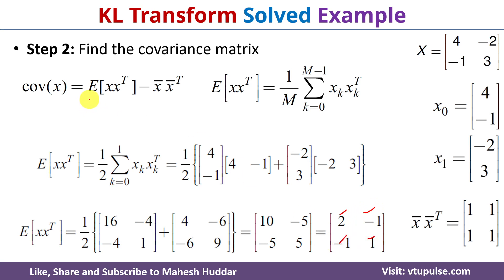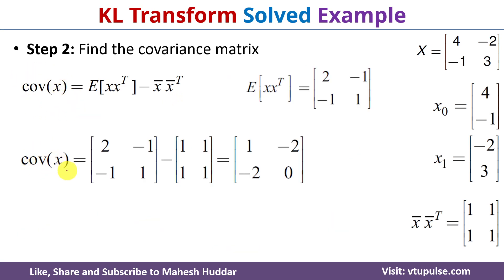Once we find the expected value and x̄ times transpose of x̄, we compute the covariance of x, which equals E[xxᵀ] minus x̄x̄ᵀ. This gives us the covariance matrix equal to [[1, -2], [-2, 0]].